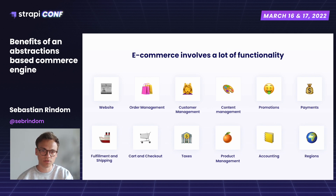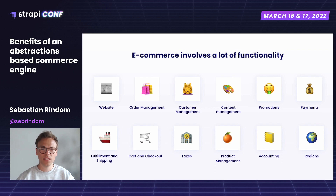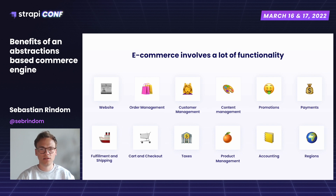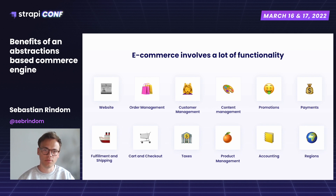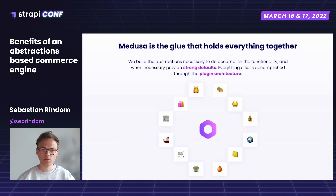For example, in the area of search you have companies like Algolia, Elastic, Typesense, Meilisearch, and many more. As an e-commerce project grows, the needs of each functionality change independently — not just the platform as a whole. This is what makes Medusa's architecture so powerful: when you have good abstractions, Medusa becomes the glue that holds all these services together and orchestrates them to work for you.